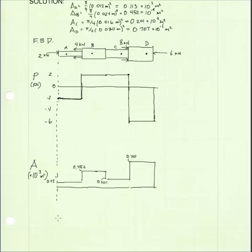Now, I'm ready to calculate values for internal normal stress at all points, beginning with point A. Normal stress at A is going to be simply the internal load, P, divided by the cross-sectional area. We can get those values off of this chart. Internal load at A is negative 2 kN, and the cross-sectional area is 0.113 times 10 to the negative 3rd meters squared.